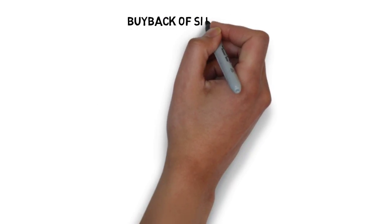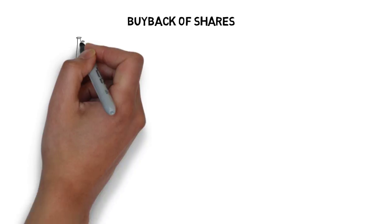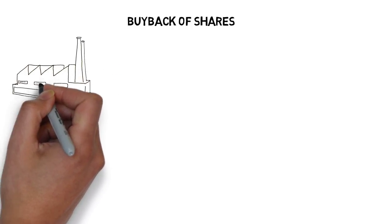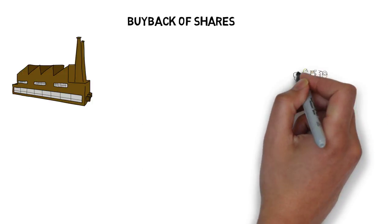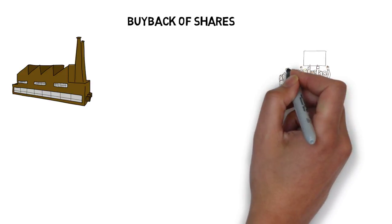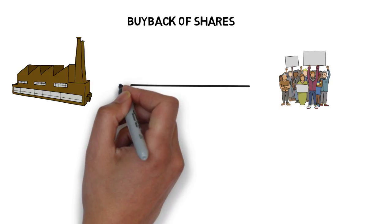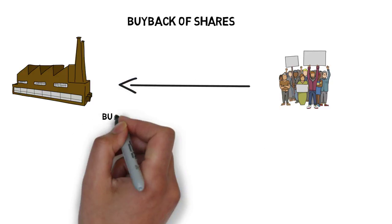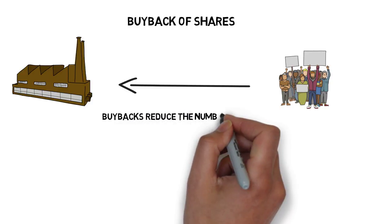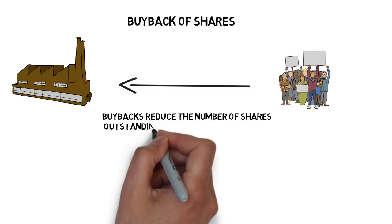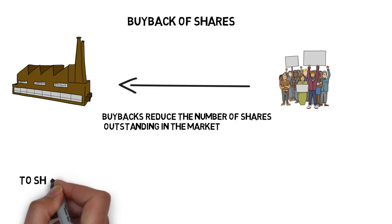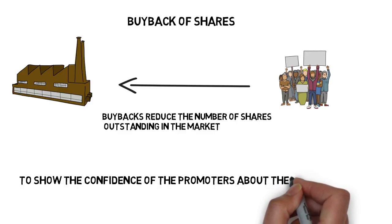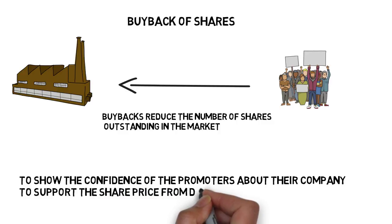Fifth is buyback of shares. The company invests in itself by buying back shares from the market. There are several reasons a company buys its own shares. Whenever the share price goes down and the company wants to prevent further decline and sustain the price, it decides to buy its own shares. With this, outstanding shares in the market decrease. It also shows the confidence of the promoters in their company.